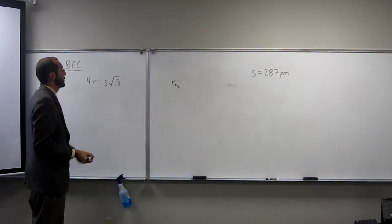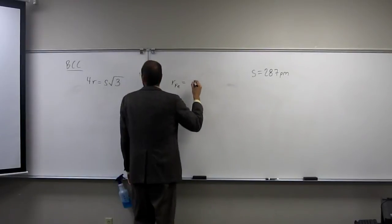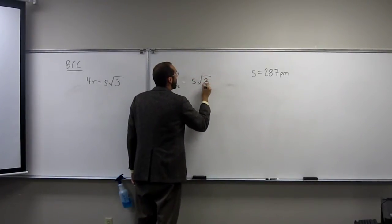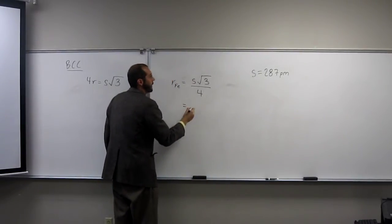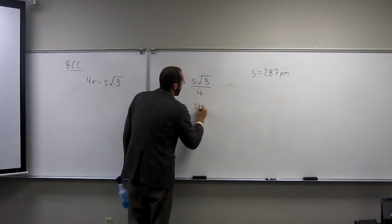And all we have to do is rearrange this, of course. S square root of 3 divided by 4 equals the radius. So now just plug and chug and it wants it in picometers.